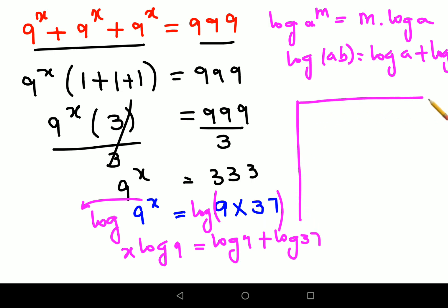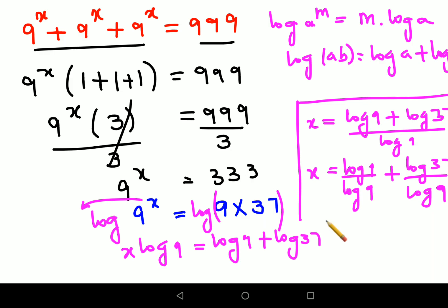So in order to find the value of x, I'll divide both sides by log 9. I'll be left with log 9 plus log 37 upon log 9. When you split it, you will get log 9 upon log 9, which is 1, plus log 37 upon log 9. So x is 1 plus log 37 upon log 9.